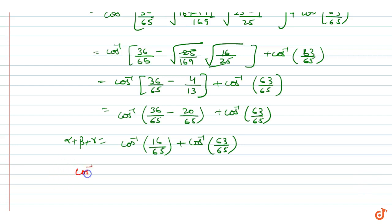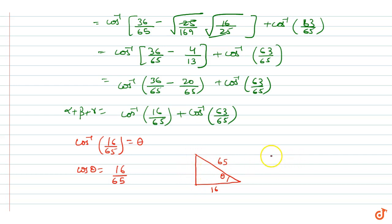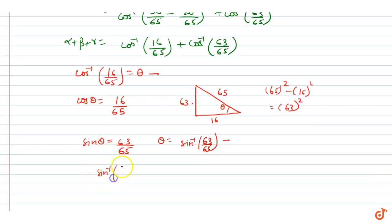Now consider cos⁻¹(16/65) = θ, so cos θ = 16/65. If we look at this in a triangle with angle θ, the adjacent side is 16 and hypotenuse is 65. By Pythagoras theorem, the opposite side is √(65² − 16²) = √(63²) = 63. So sin θ = 63/65, meaning θ = sin⁻¹(63/65). Therefore sin⁻¹(63/65) = cos⁻¹(16/65).